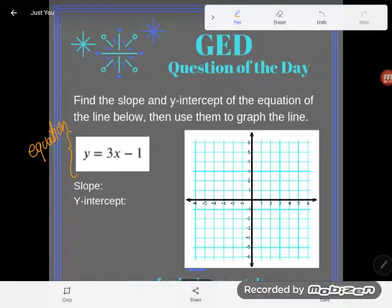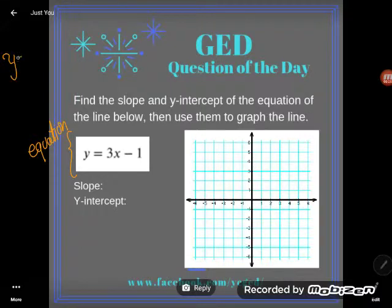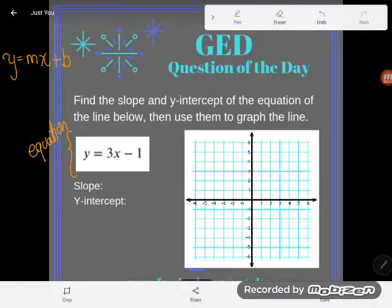So this might sound hard to you but it actually is a really simple concept if you know one thing: the slope-intercept form of the equation of a line. That is y equals mx plus b. Maybe you've heard your teachers throw this around before, y equals mx plus b, but never really knew what they were talking about.